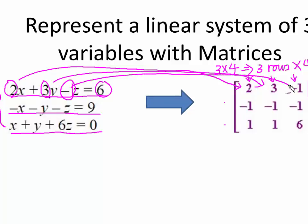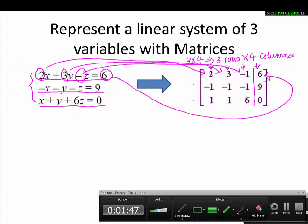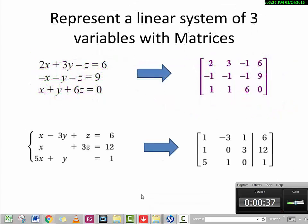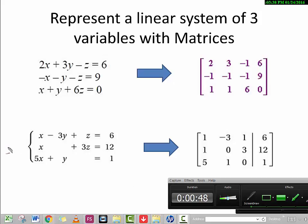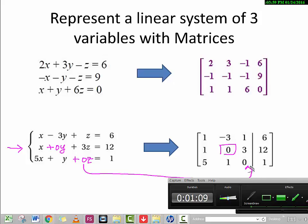For the first row we have 2, 3, minus 1, and 6. For the second equation, the coefficients are negative 1, negative 1, negative 1, and 9. For the third, 1, 1, 6, and 0. Note: if a variable has no written coefficient, it is implicitly 1. Also, if a variable is missing from an equation entirely, you must still put a 0 as its coefficient in the matrix — for example, if there's no y term, write 0 for that column, since you can think of it as plus 0y.